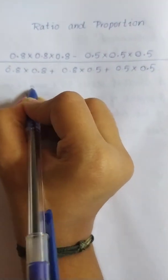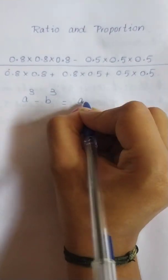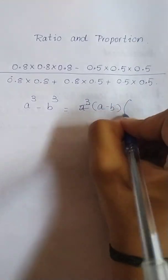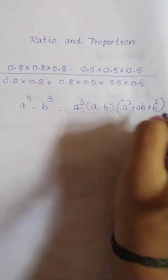Now I will tell you our formula, okay? A cube minus B cube is equal to, sorry, A minus B into A square plus AB plus B square. This is the formula.